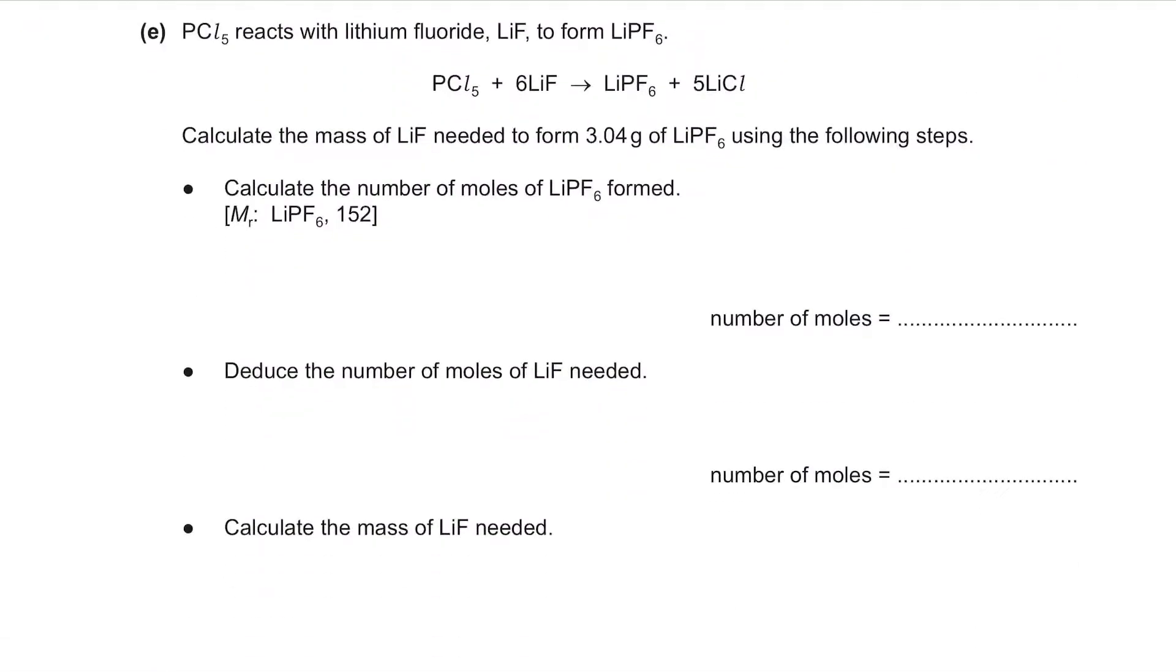PCl5 reacts with lithium fluoride LiF to form LiPF6. This is the reaction that's given. Calculate the mass of LiF needed to form 3.04 grams of LiPF6 using the following steps. First, we have to calculate the number of moles of LiPF6 formed. The formula of number of moles is number of moles equals mass over MR or the relative molecular mass. The mass of LiPF6 is given, it's 3.04, so 3.04 divided by the MR, which is 152. And we'll get 0.02 for the answer.